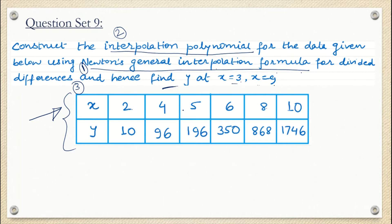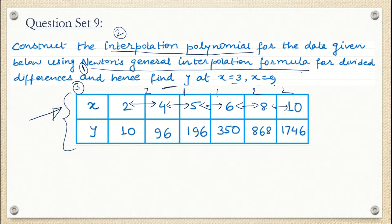From the table you can see that the x data points are 2, 4, 5, 6, 8, 10, meaning the intervals between them are not equal. The difference between 2 and 4 is 2, between 4 and 5 is 1, between 5 and 6 is 1 — they are not equal. So if they are not equal, we cannot use Newton's forward or backward interpolation formula. Here we have to use Newton's general interpolation formula.